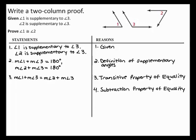Next, by the subtraction property of equality, you can subtract the measure of angle 3 from both sides of the equation to get the measure of angle 1 equals the measure of angle 2.